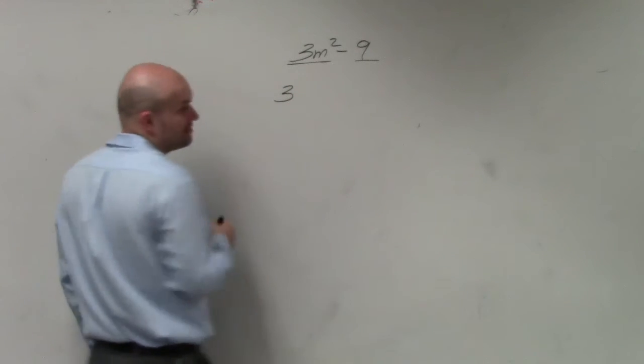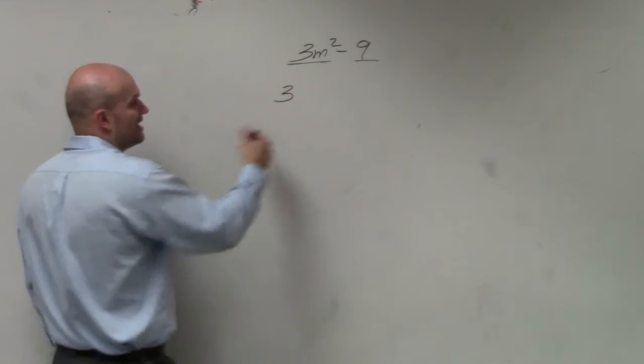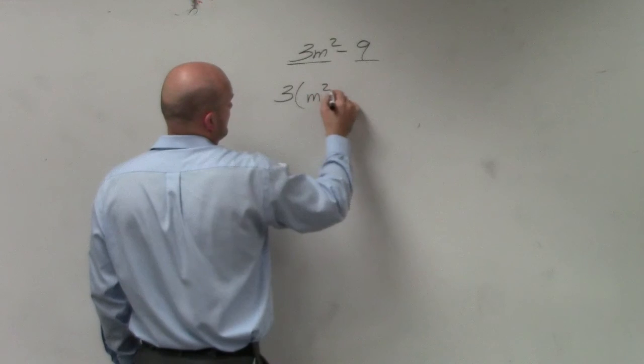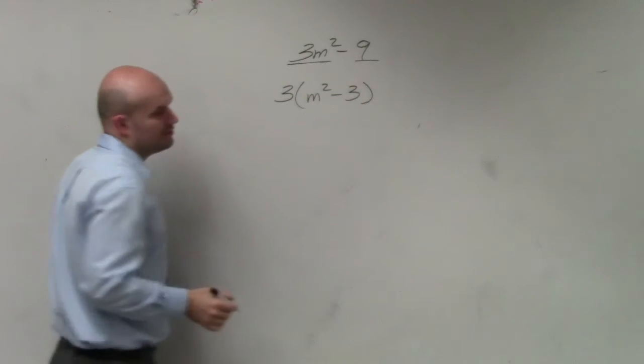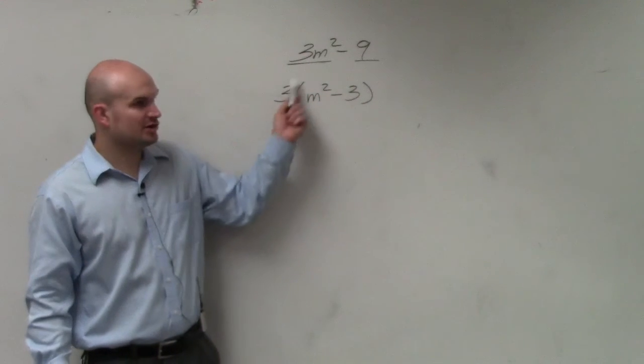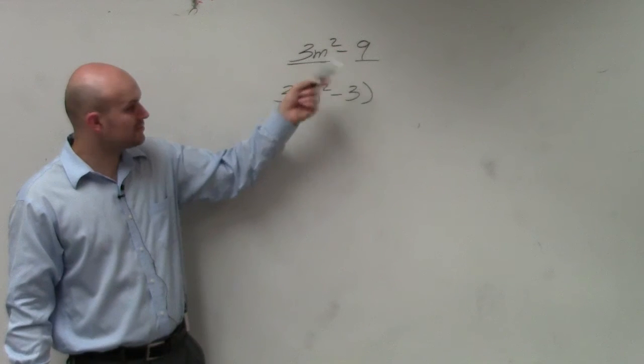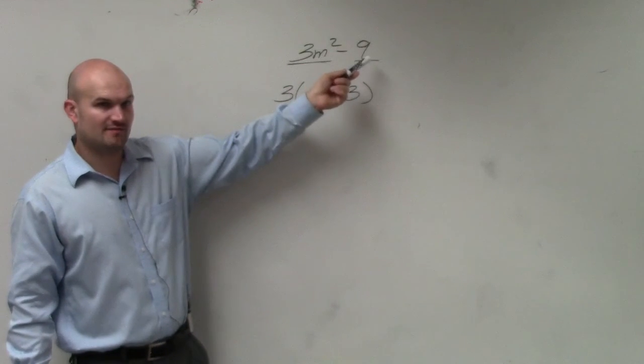So I can factor out a three. And basically, factoring out a three is like dividing out a three. And you can always check your work by using distributive property. Three times m squared is 3m squared. Three times negative three is negative nine.